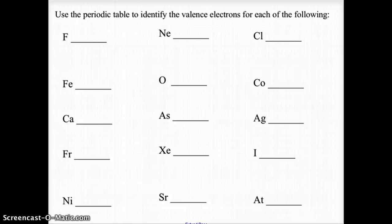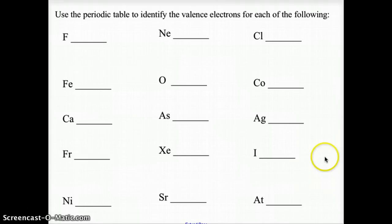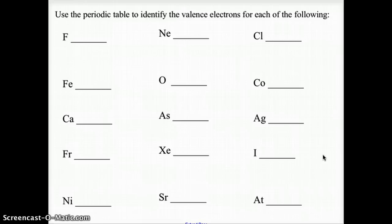So using your periodic table, go ahead and fill in the rest of this table. For each of the following elements, determine how many valence electrons each of them would have. Go ahead and turn off the video now and try these problems, and when you're finished, you can come back and check how you did.